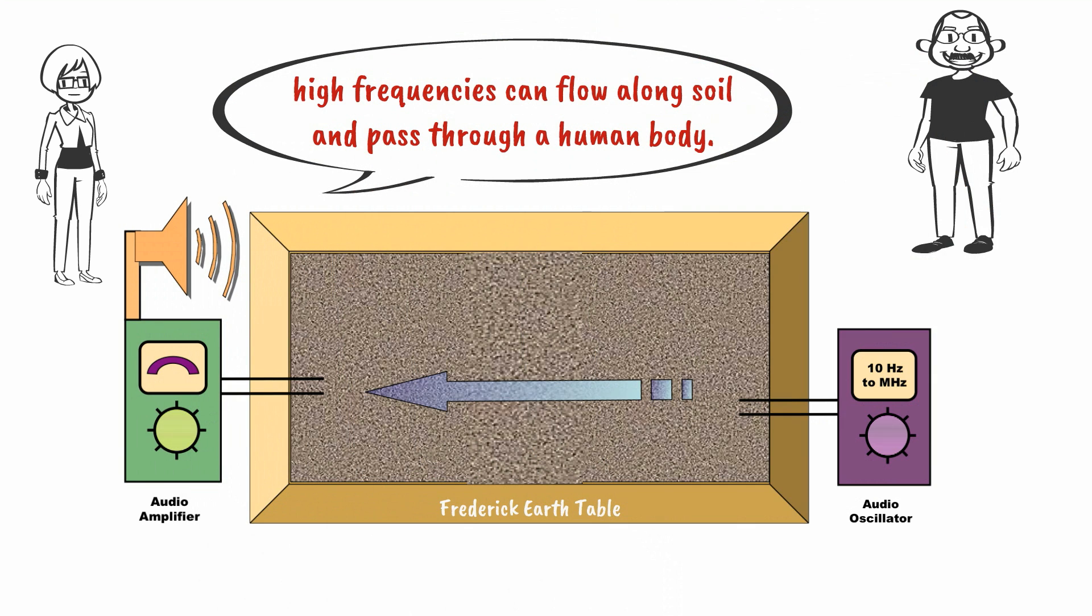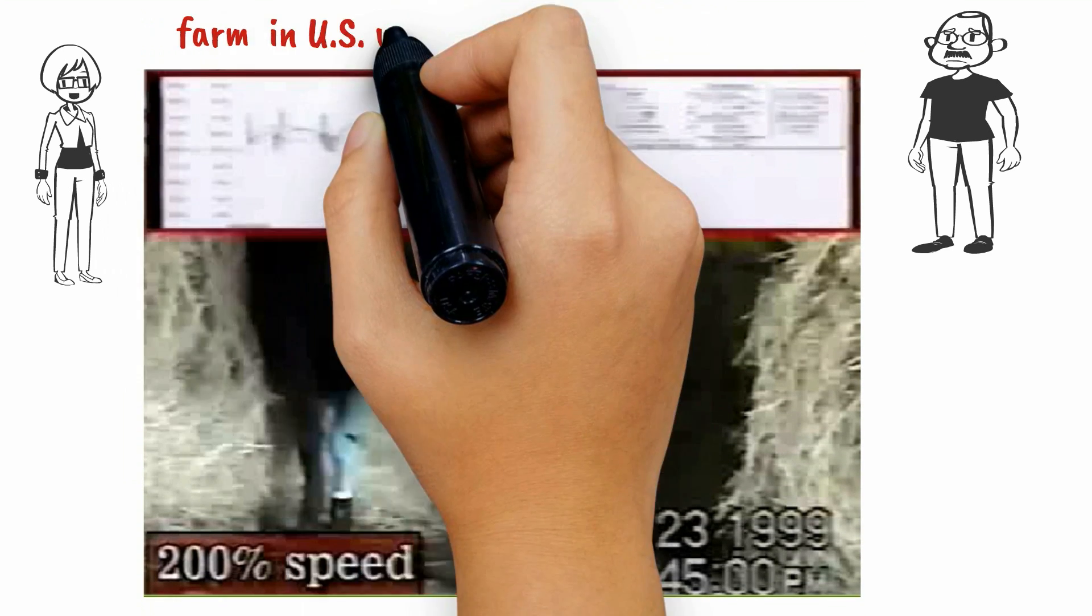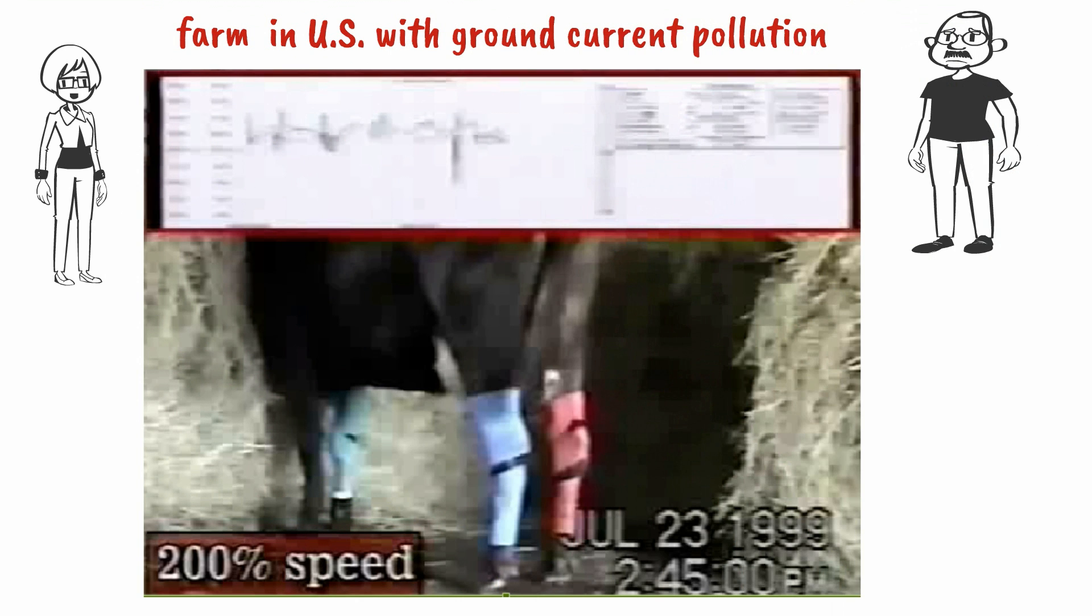Ralph, this is an excellent demonstration showing that high frequencies can flow along soil and can pass through a human body. This is exactly what is happening to cows on a farm with high-frequency ground current pollution.